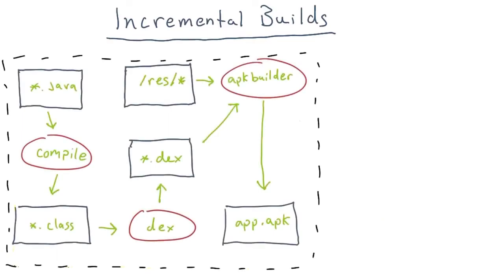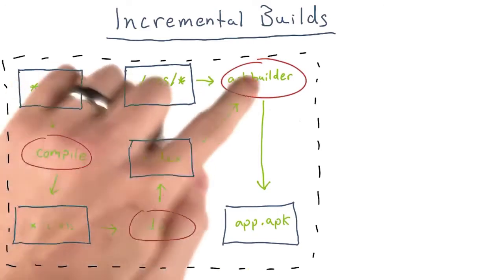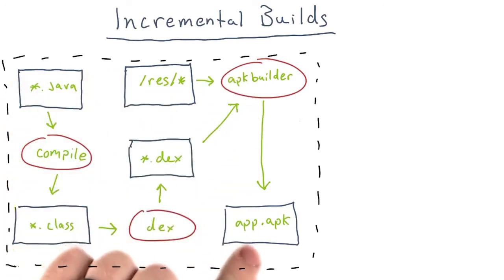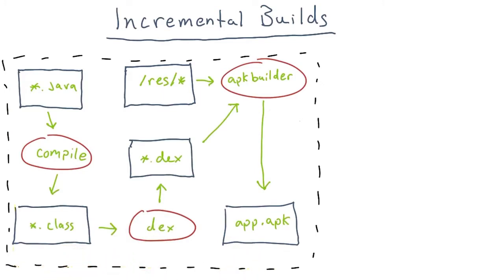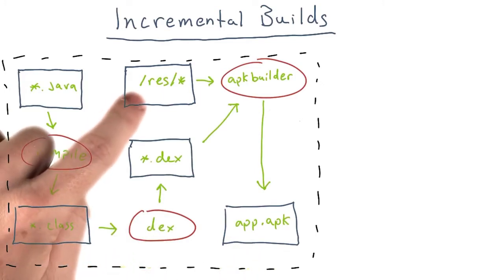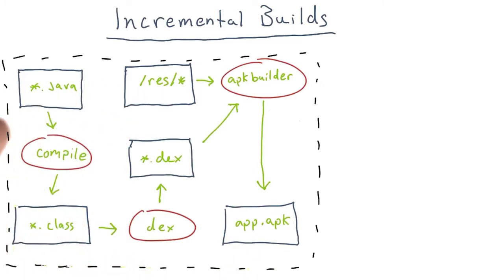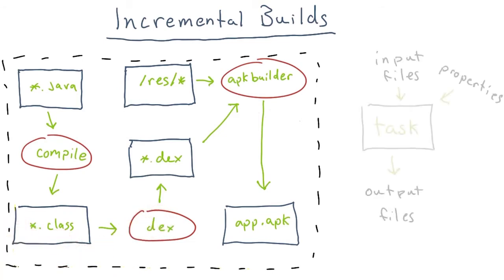For example, let's consider an Android application. Building our app requires compiling our code, generating source files, and packaging static resources into the final APK. If we were to change one of our layout files, we don't want to have to compile our code again. That would be unnecessary.